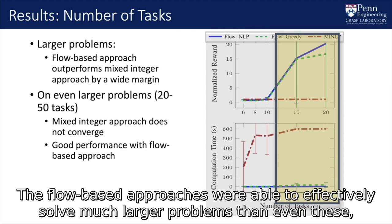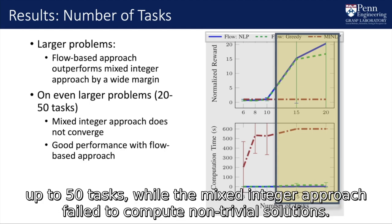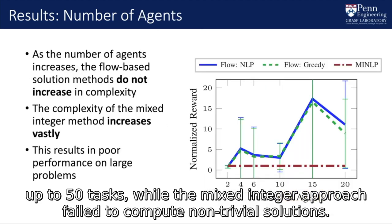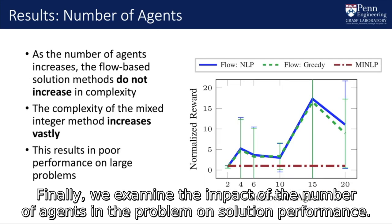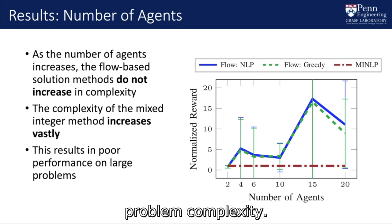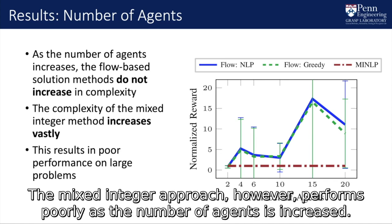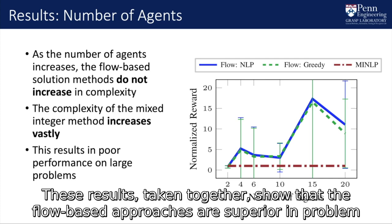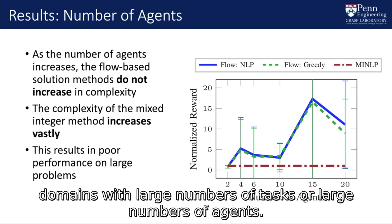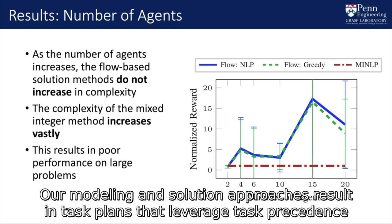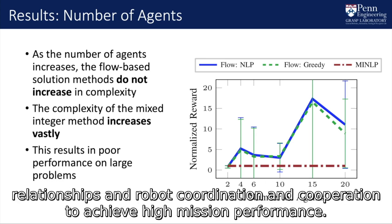The flow-based approaches were able to effectively solve much larger problems, up to 50 tasks, while the mixed integer approach failed to compute non-trivial solutions. Finally, we examine the impact of the number of agents on solution performance. For the flow-based approaches, increasing the number of agents does not increase problem complexity. The mixed integer approach, however, performs poorly as the number of agents is increased. These results taken together show that the flow-based approaches are superior in problem domains with large numbers of tasks or large numbers of agents. Our modeling and solution approaches result in task plans that leverage task precedence relationships and robot coordination and cooperation to achieve high mission performance.